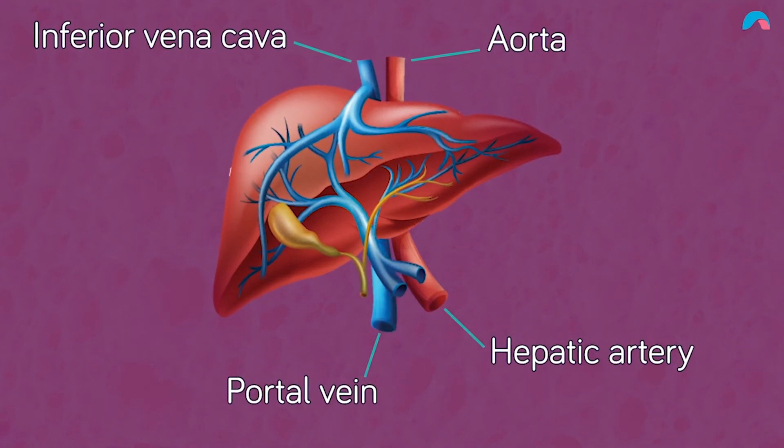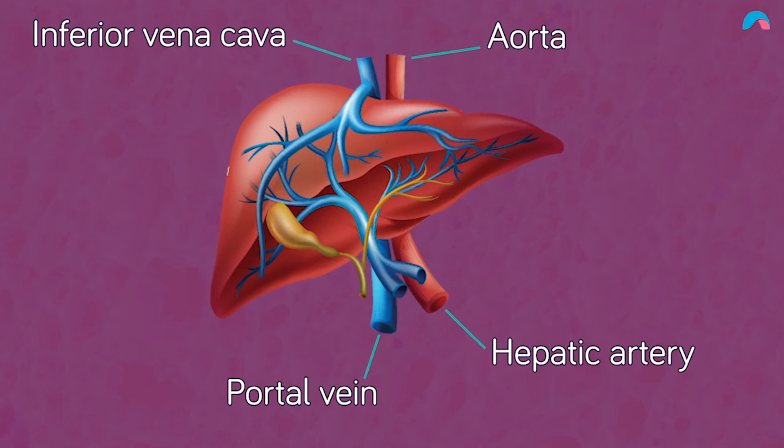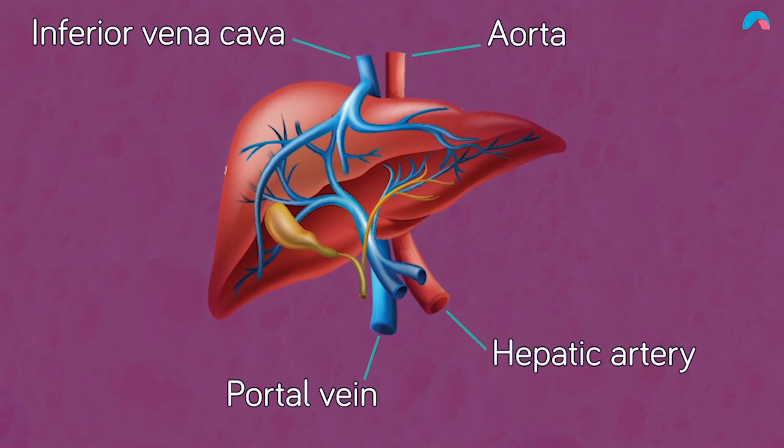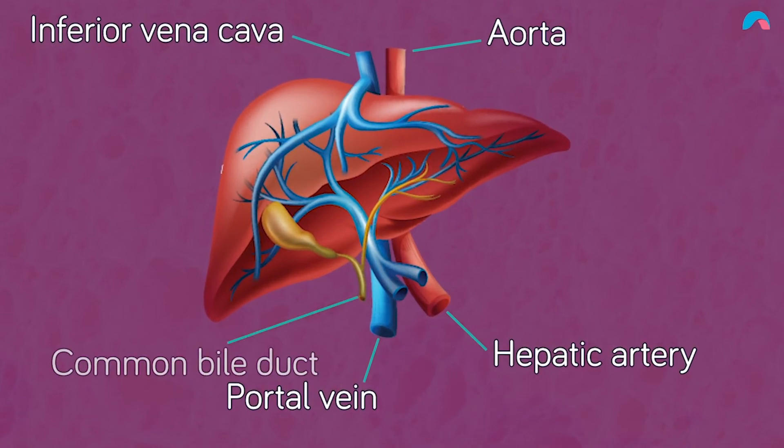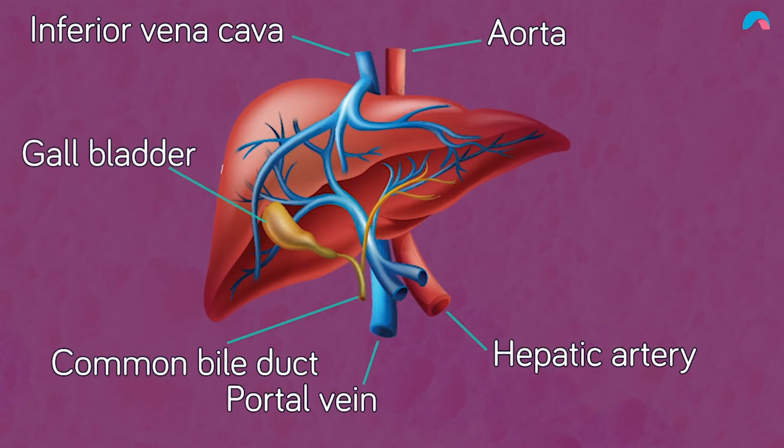There's also a complex system of bile ducts known as the biliary tree, which drains bile into the common bile duct and gallbladder.